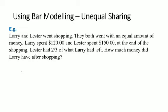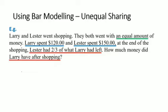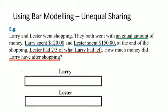As with every problem, a good practice is to underline or highlight the most important points that emerge from the question. Having done that, we can see that at the beginning, both Larry and Lester had an equal amount of money. This can be represented by bars of equal length and width, like this. Remember, in bar modeling, spatial equivalence is important. Larry spent $120 and Lester spent $150, so the area representing Larry's spending should be smaller than the area representing Lester's spending, like this.